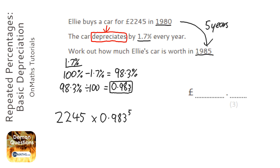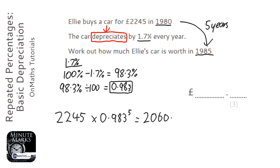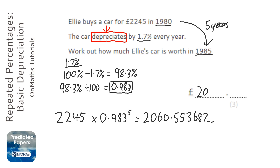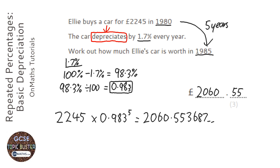So 2245 on the calculator times 0.983 to the power of five gives the answer 2060.55, rounded to two decimal places because it's money. Last thing — just check your answer makes sense. The car was worth £2245, it's depreciated by 1.7% which is not very much, so it's lost roughly £200. The answer makes sense.